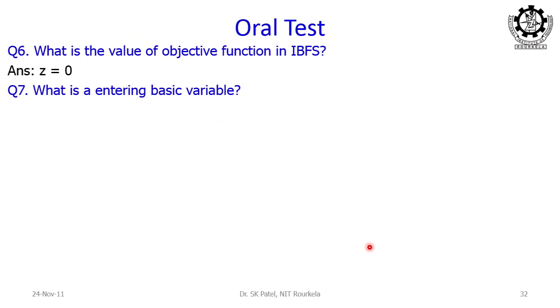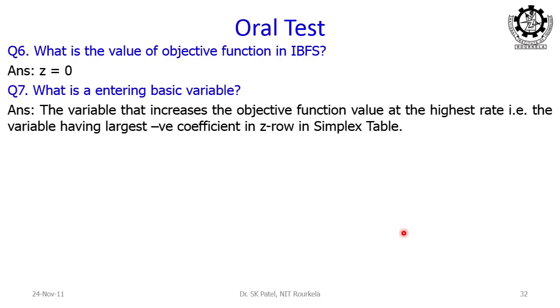What is an entering basic variable? It can be in any iteration. It is a variable that is currently a non-basic variable, which will now become a new basic variable. This is the non-basic variable which will increase or decrease the objective function — depending on whether the objective is to maximize or minimize — at the highest rate. To identify it in the simplex table, look at the z-th row: the coefficient which is the largest negative will be treated as the entering basic variable, because in the z-th equation everything is taken to the left-hand side.